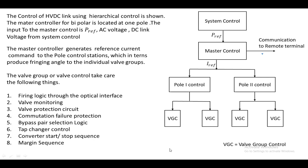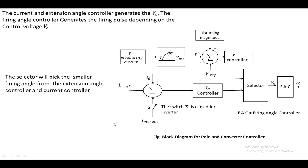Next is the margin sequence. The block diagram for the pole and converter control consists of two loops: one is the gamma control loop and the other is the current control loop. The gamma control loop includes a gamma measurement circuit that measures how much gamma angle is being maintained in the rectifier station.